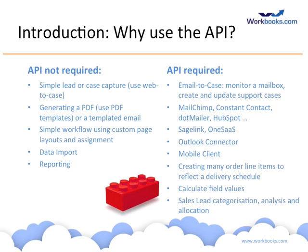Our integrations with MailChimp, ConstantContact, dotmailer, and HubSpot are all implemented using the API through PHP scripts under the Process Engine. In all those cases, we are synchronizing records of various types between Workbooks and a third-party system — all bidirectional and with the concept of state, knowing what records have been synchronized and what still needs to be done. There's also an integration with Sage via a third-party called Iger Systems, who implemented SageLink to move records in and out of Sage Line 50, and a OneSaaS integration acting as a clearinghouse for records across various cloud services.